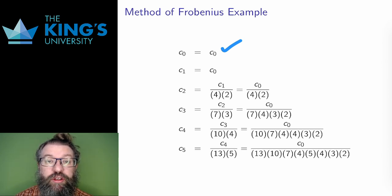The c₁ minus c₀ term outside the general recurrence relation gives me that c₁ has to be the same as c₀. And then I apply the recurrence relation to start calculating coefficients.